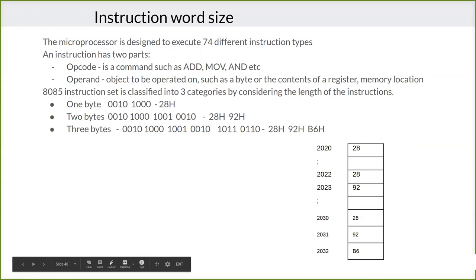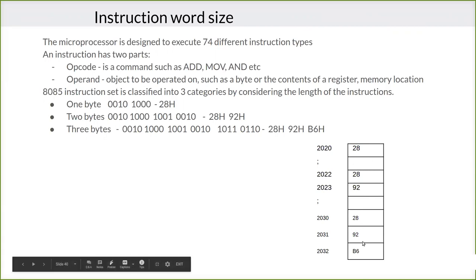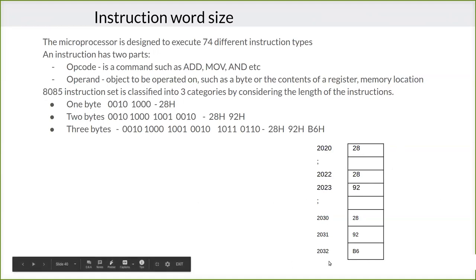In memory, each line consists of eight bits of data — you can store eight bits in one line. The address of each individual line is done with 16 bits. That is why the address lines are 16 bits in the 8085 microprocessor architecture, allowing memory to be addressed with 16 bits of information. This gives us 2 to the power 16, roughly 64K of memory. The 8085 microprocessor has 64K of memory.